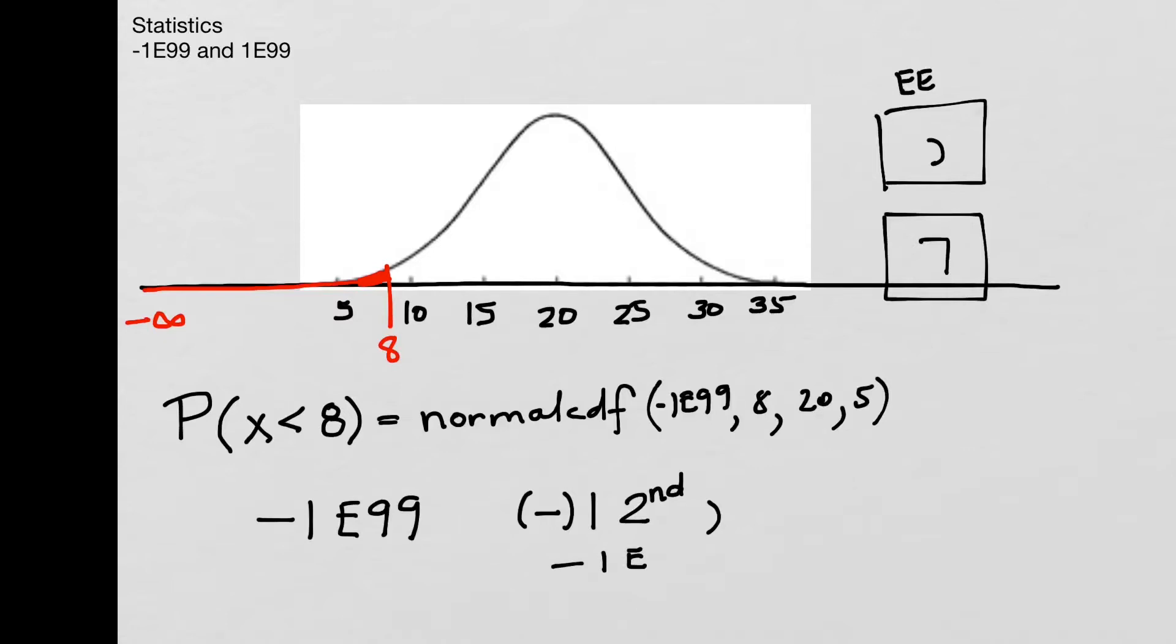You would think they would put two E's because it says two E's on the button. And no, they don't. So there you go, Texas Instruments. And then we put the 99 on the end, and so on the calculator it's going to say negative 1E99.